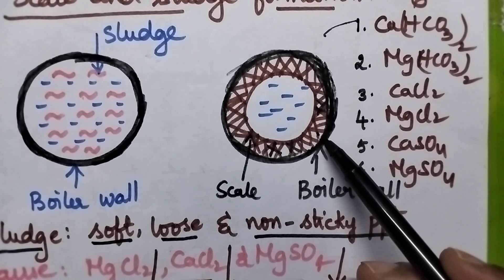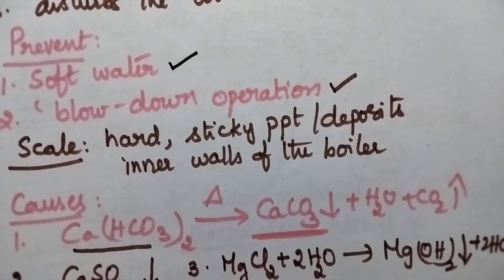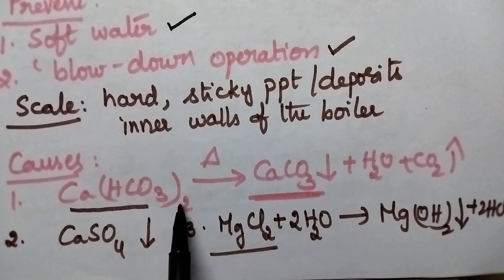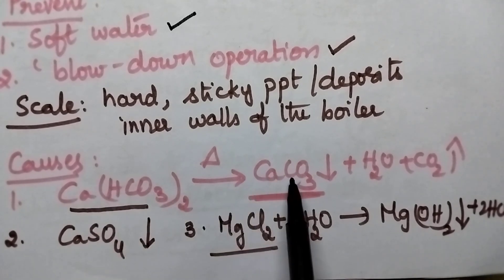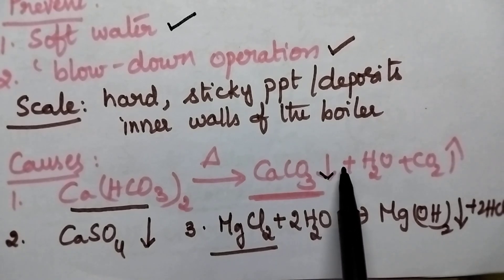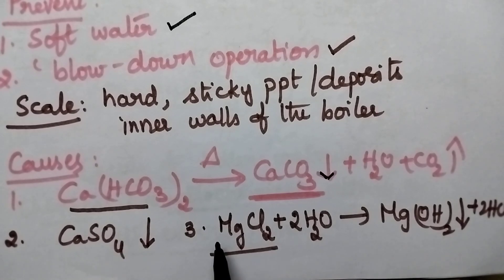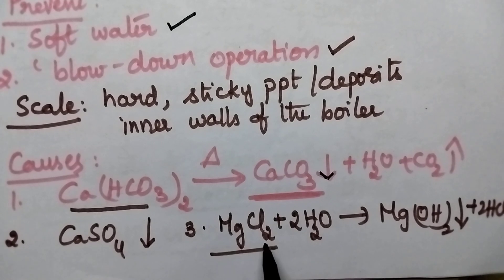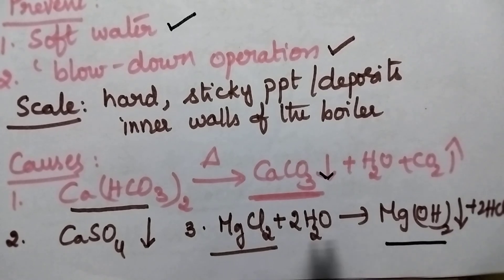The major causes for the formation of scales: scales can be formed due to the presence of calcium bicarbonate, calcium sulphate, or magnesium chloride in the boiler feed water. When calcium bicarbonate is present at higher concentrations, during the boiling process it precipitates out as calcium carbonate, which is a hard scale that sticks on the walls. Similarly, calcium sulphate precipitates on the inner walls at high temperatures. If magnesium chloride is present, it undergoes hydrolysis during boiling and forms magnesium hydroxide, which is also a sticky precipitate responsible for scale formation.